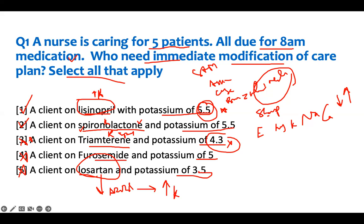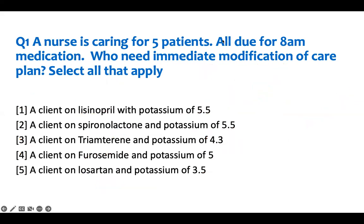I intentionally designed this question so you know which medications affect potassium. Lasix and thiazides waste potassium; the rest — lisinopril, spironolactone, triamterene, ARBs — are potassium-sparing. These are medications you must know. They may ask you questions requiring you to think about being sharp, priority action. Know whether the medication is a potassium sparer or potassium waster — they are very important.